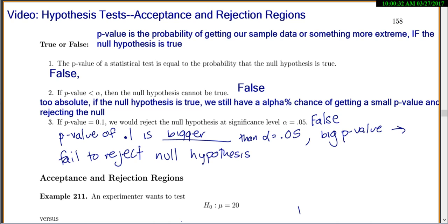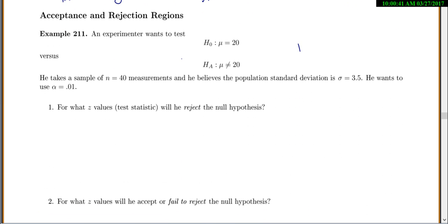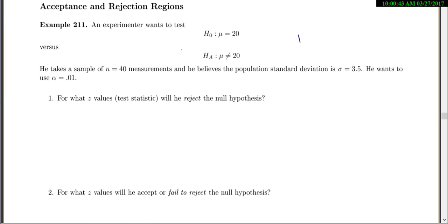Now that we have that, let's actually look at what's called acceptance and rejection regions. This is just another way to do hypothesis tests instead of p-values. I like p-values a lot better, but it is something that comes up fairly often. We'll probably just do it a couple times, and then it's more familiar if you ever have to do it again. Let's see. So an experimenter wants to test the hypothesis that mu is equal to 20 versus that mu is not equal to 20. And when you see the not equal to, that means that you're looking at both tails.